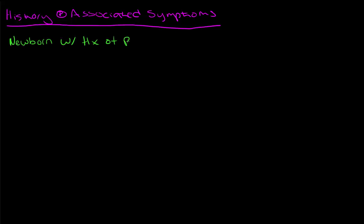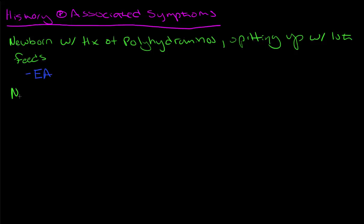So we're going to have a newborn with a prenatal history of polyhydramnios that would be detected on ultrasound, and they'll be spitting up copious amounts of secretions with their first feeds, and once again we're back at esophageal atresia because they have an impaired swallowing.